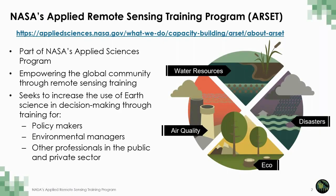For those of you who may be unfamiliar with our RCEP program, we are part of NASA's capacity building program under Applied Sciences and are designed to empower the global community through remote sensing training. We have a variety of training types with four application areas: air quality, water resources, disasters, and eco-forecasting, which is where our team resides. Our training levels range from introductory all the way to advanced trainings with guides for remote sensing analysis.